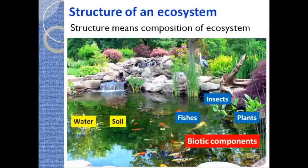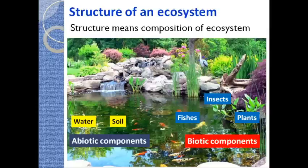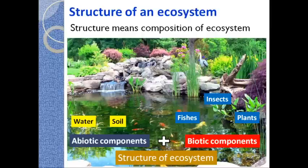Water, soil, and air will be part of the abiotic components of this pond ecosystem. So fishes, insects, and plants form the biotic components, and together the combination of biotic and abiotic components forms the structure of any particular ecosystem. That was about the structure of ecosystem.